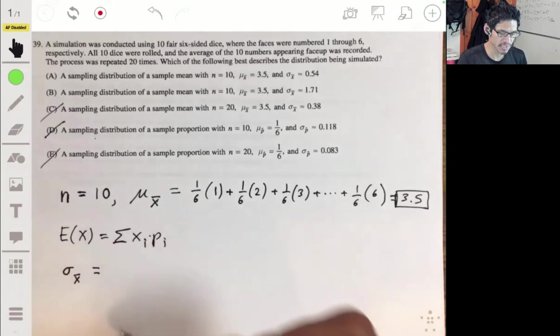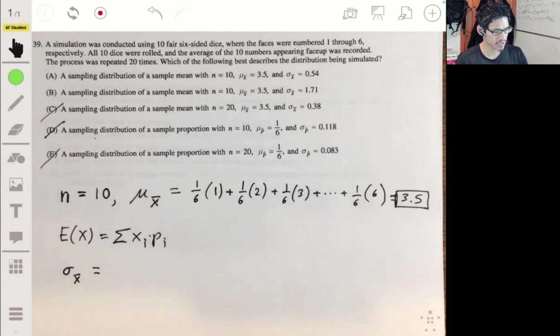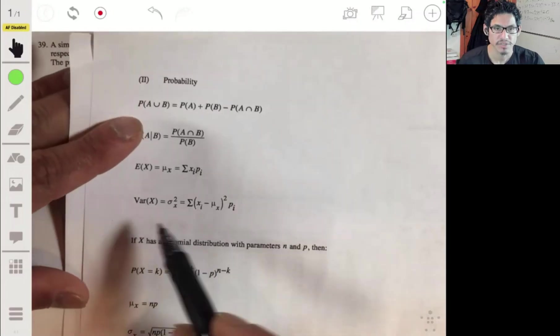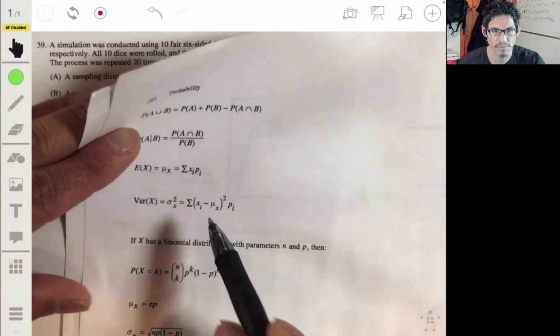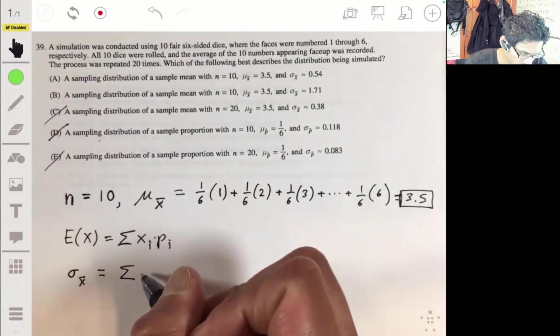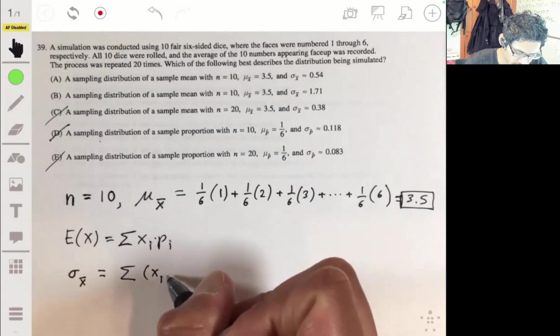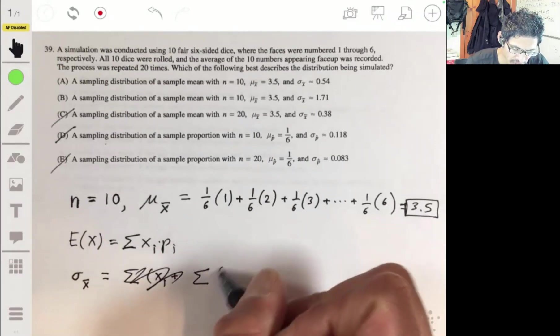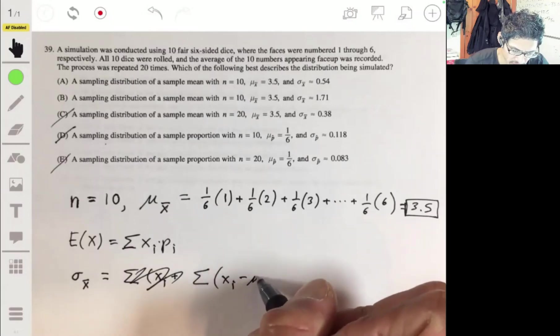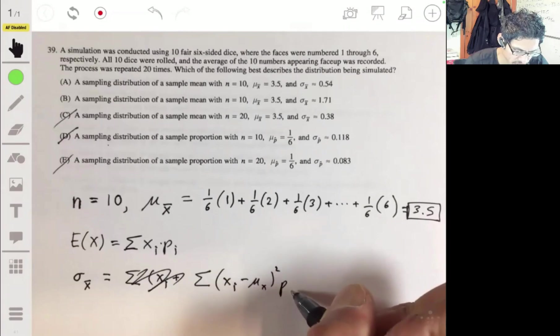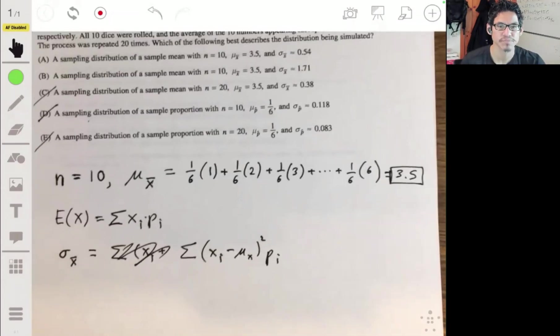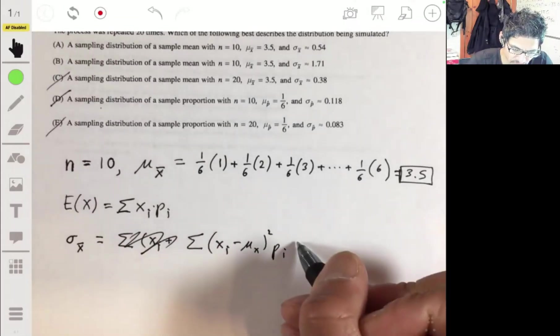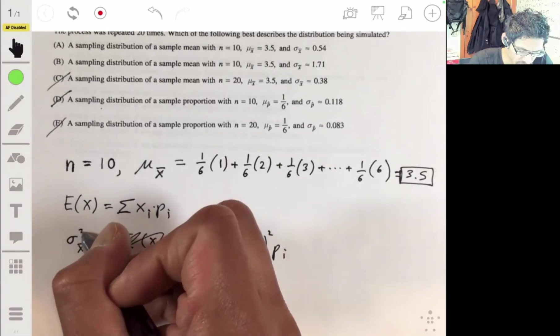What we do then is we take the equation for the variance. Let me just show you on the formula sheet, because I don't expect you to memorize this. It's the sum of the differences between each value and the mean squared times their corresponding probabilities. This is the variance.